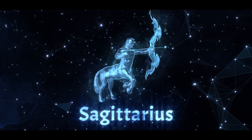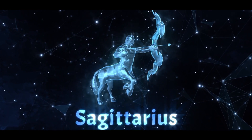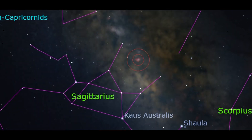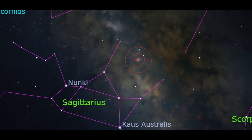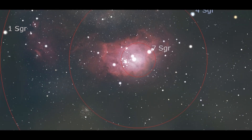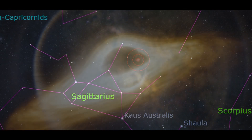The Lagoon Nebula is located in the Sagittarius constellation and it's very easy to find. You just have to identify that teapot in the sky and the nebula is located just above it. It's so large and bright that even with binoculars you can see it.